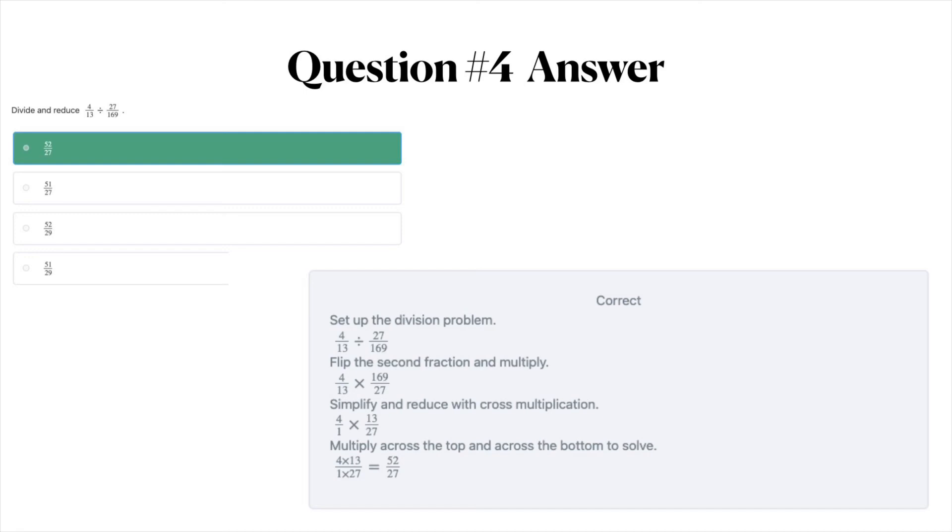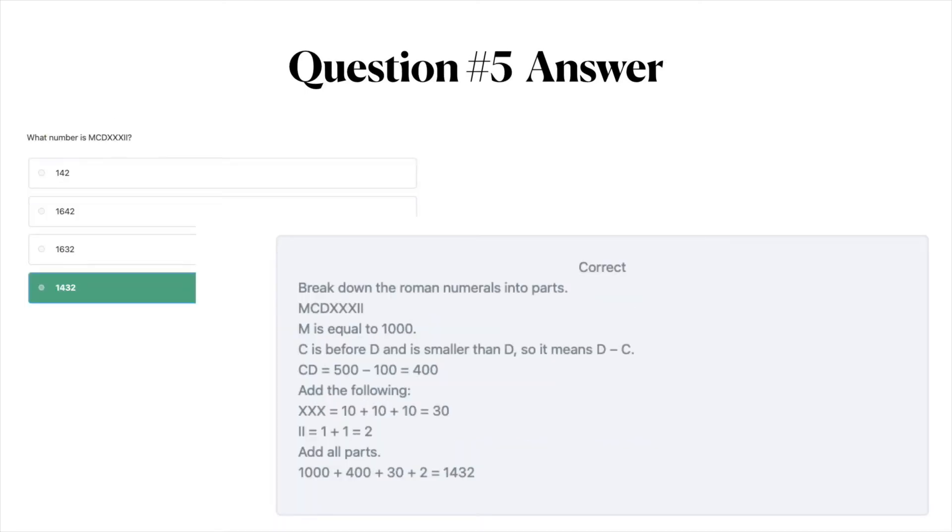The answer to question number five is D, 1432. So first you break down the Roman numerals into parts. M is equal to 1000. C is before D and is smaller than D. So it means D minus C. So C, D together is 500 minus 100 which equals 400.